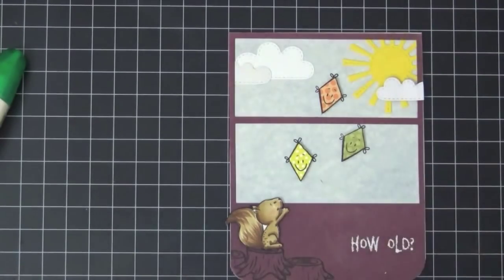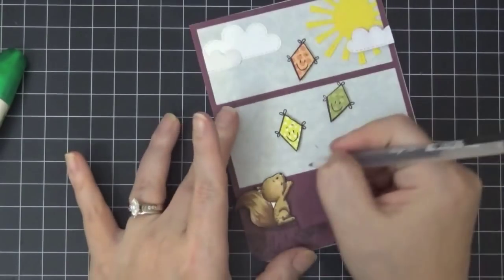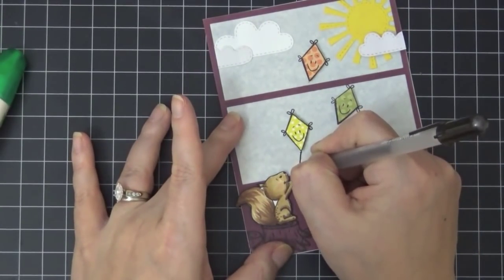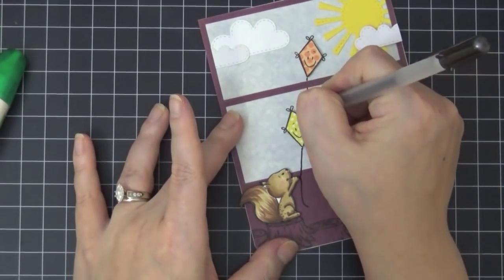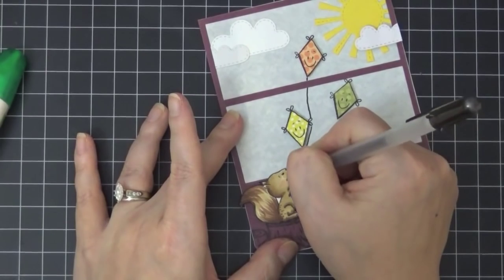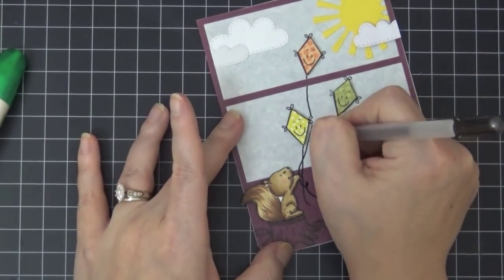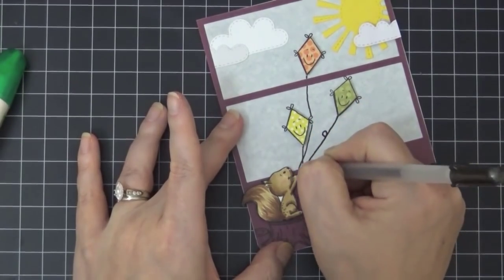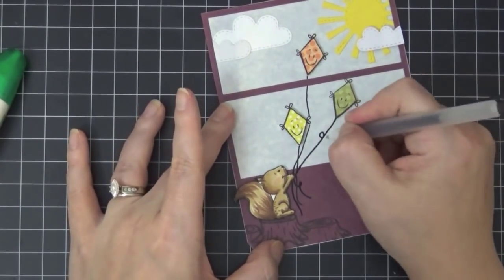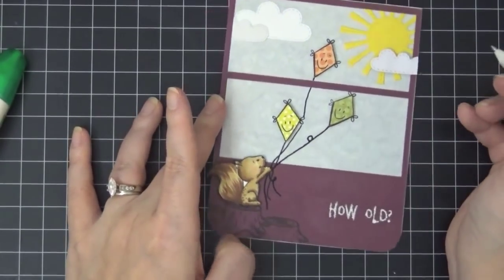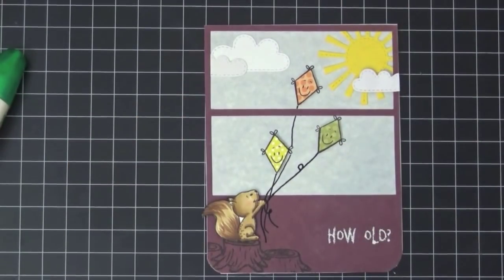And now I'm using a black gel pen, and I'm going to make the kite strings. And I'm just drawing it free hand, trying to make it look as natural as possible. I'm not the best doodler. And I went over the squirrel's eye and the nose as well with the black gel pen.